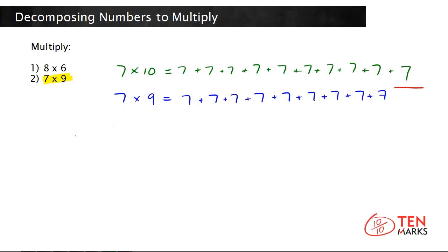So, 7 times 10 is 70. If you subtract one 7 away, you get 63. This means that 7 times 9 equals 63.